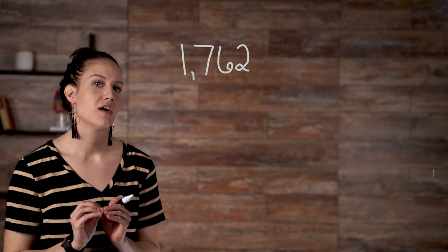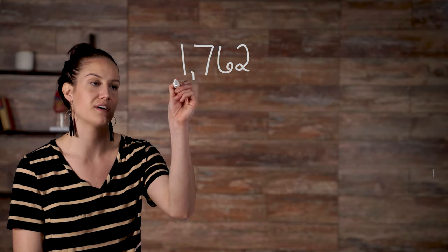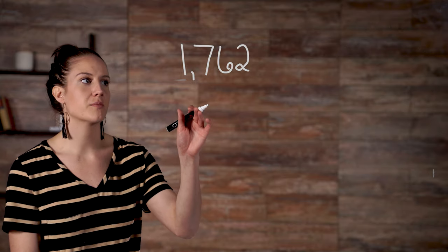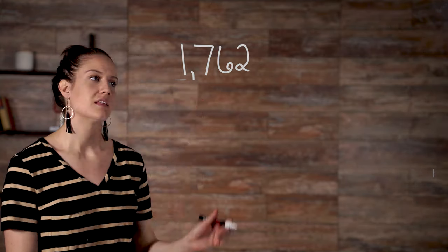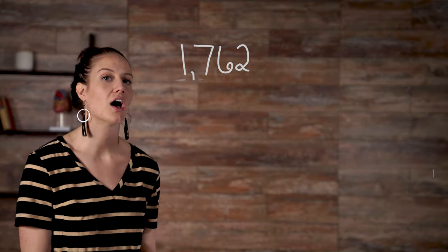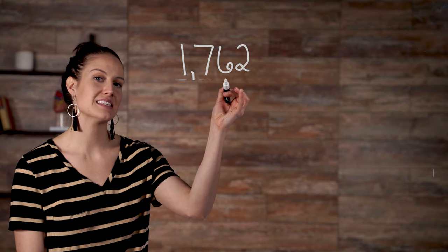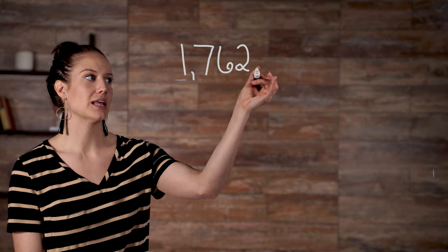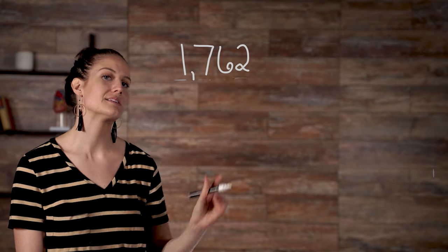Let's look at the number 1,762. Based on place value, the number to the far left has the largest value. In this case, the number farthest to the left is in the thousandths place. The second number farthest to the left, our seven, is in the hundredths place. The third number, six, is in the tens place. And then our last number here, which is farthest to the right, is in the ones place.